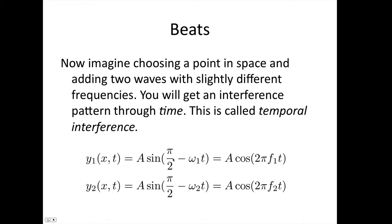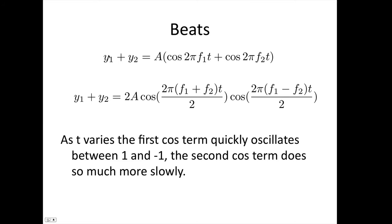The only reason we've put this π/2 here is so we can make them into cos functions, so they're nice and easy to add. So y₁ + y₂ equals A, pulling the amplitude out front as a common factor, cos(2πf₁t) + cos(2πf₂t).